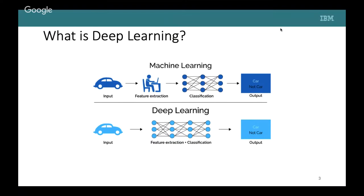A quick overview for those new to the field: traditionally, machine learning involves taking some input, doing feature extraction — either manually or by handcrafted features like SIFT or HOG — performing predefined tasks on the pixels, and then using some classification such as neural networks, k-nearest neighbor, or SVM to get the output. For example, a car detection model outputs 'car' or 'not car'.